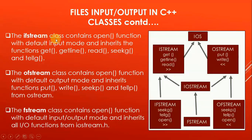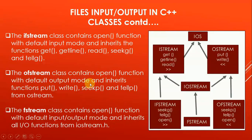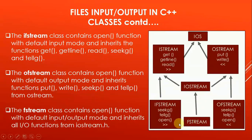The ifstream class contains the open function with default input mode, and it inherits the functions get, getline, read, seekg, and tellg. The ofstream class contains the open function with default output mode and inherits functions put, write, seekp, and tellp from ostream. The fstream class inherits from iostream.h and contains the open function with both default input and output modes, and it inherits all the I/O functions from iostream.h.